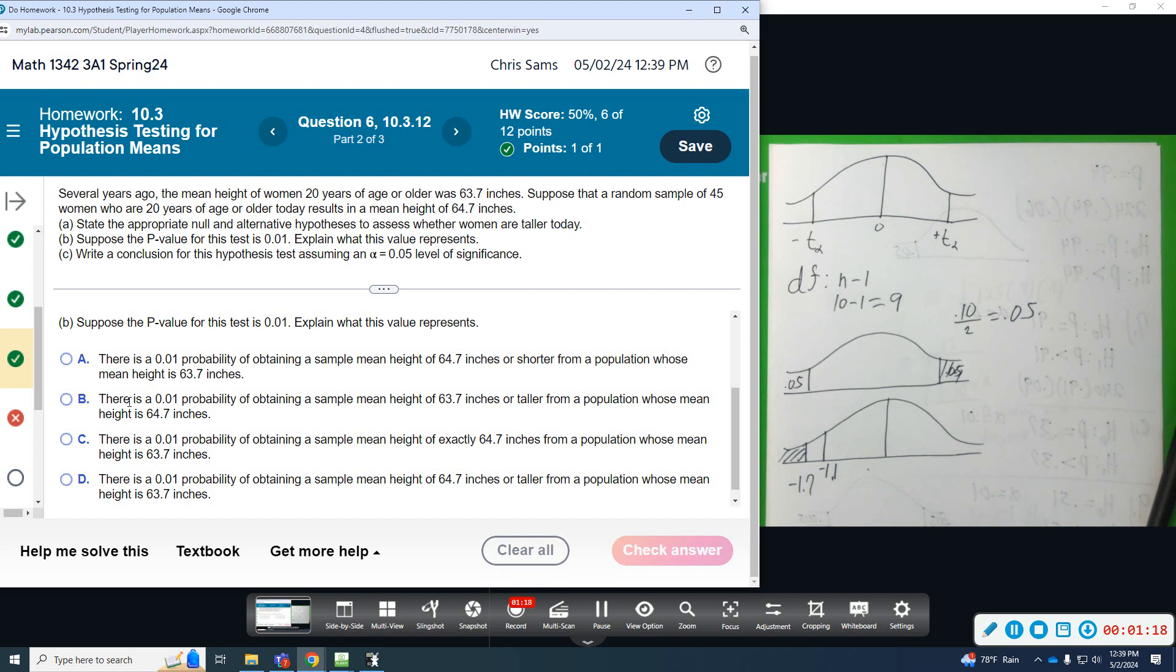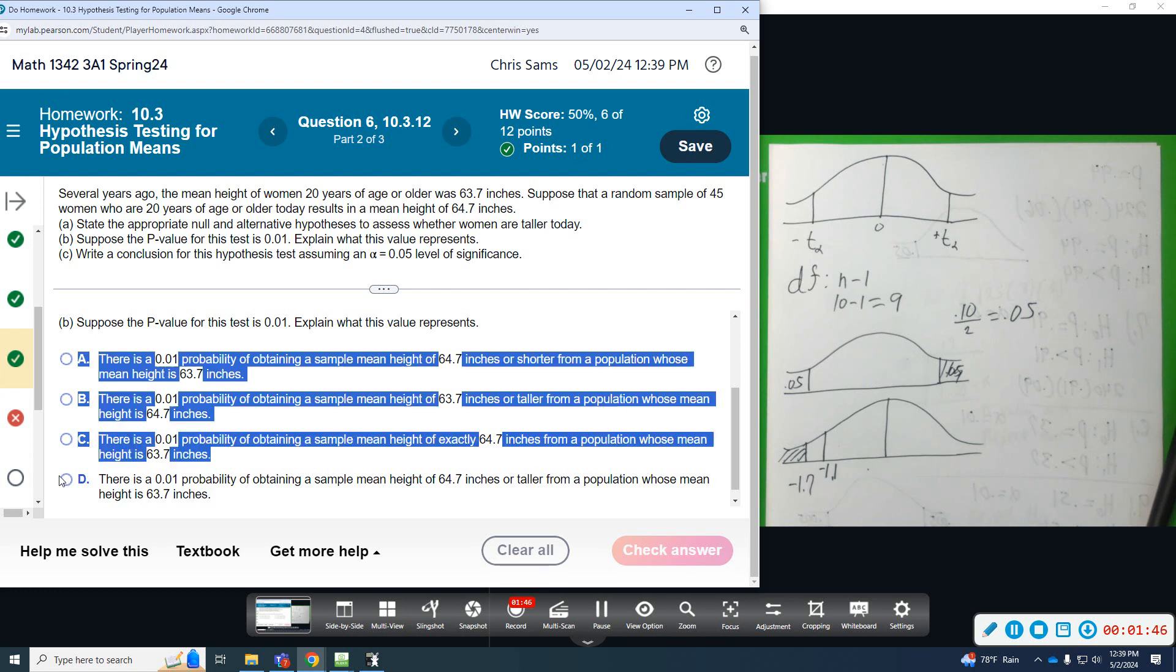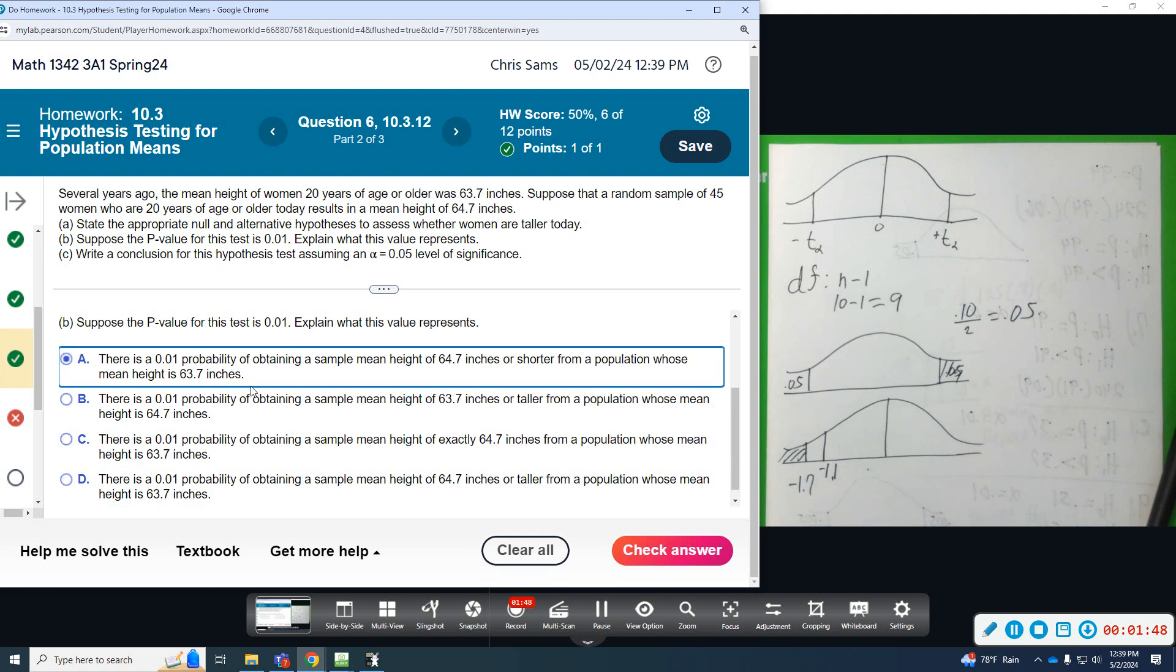So, one percent probability sample mean of this or shorter? Nope, not taller. One percent probability the mean is 63.7? No, just using the mean we're talking about the sample mean that's from the population. Probability one percent of obtaining a sample mean height of exactly? Not exactly. Probability of obtaining a sample mean height of this many inches or taller from a population whose mean is 63.7? Yes.